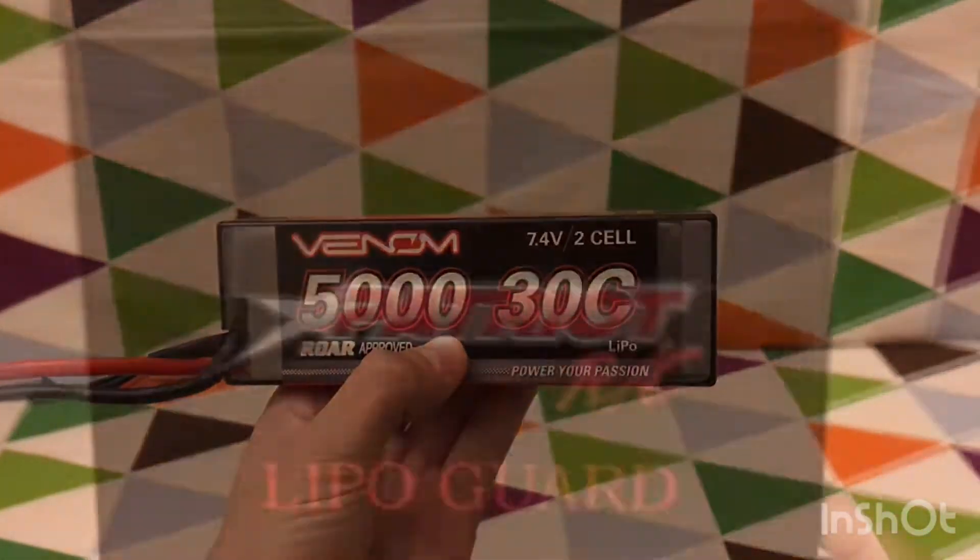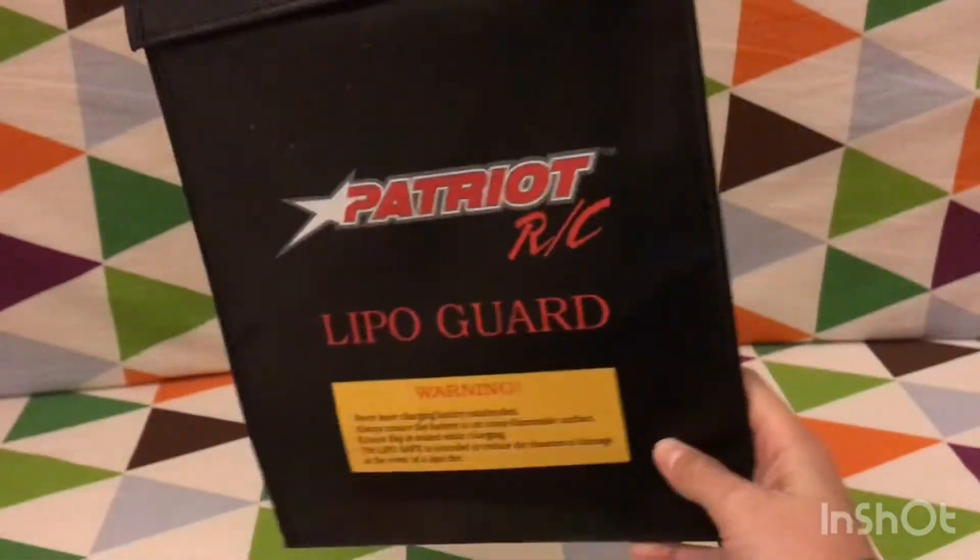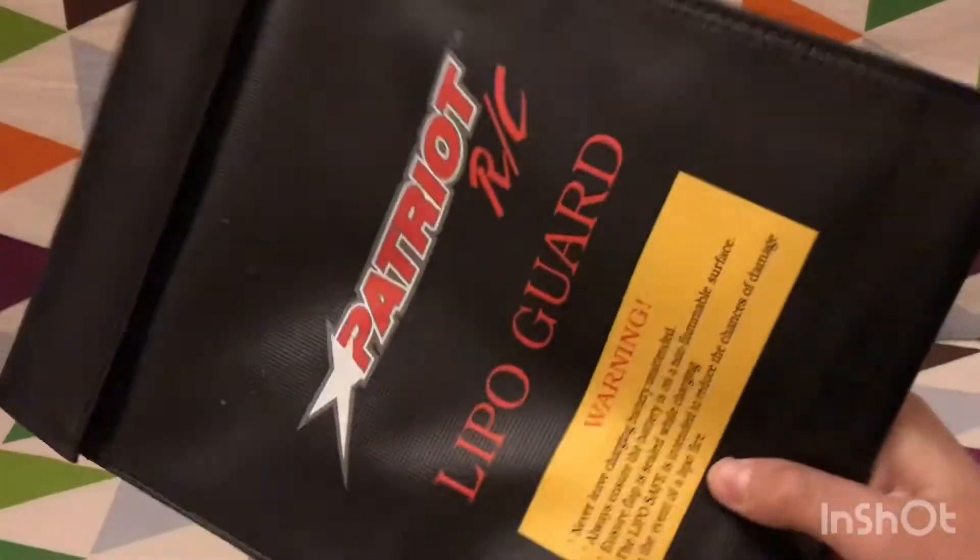So let's get into the bag now. This is the Patriot RC LipoGuard bag. As you can see, this is the size of my hand—I have small hands—but this is the bag. So if you don't know what these bags are, they're relatively new.